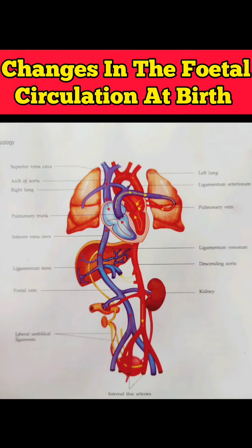Secondly, the increase in pulmonary flow increases venous return into the left atrium and therefore the left atrial pressure. The combined effect of these two events is to increase the left atrial pressure above the right atrial pressure and provide a physiological closure of foramen ovale, which occurs soon after birth, but anatomical closure may take up to one year. The closure is reversible in early neonatal life, as cyanosis may develop during crying due to shunting of blood from right atrium to left atrium.